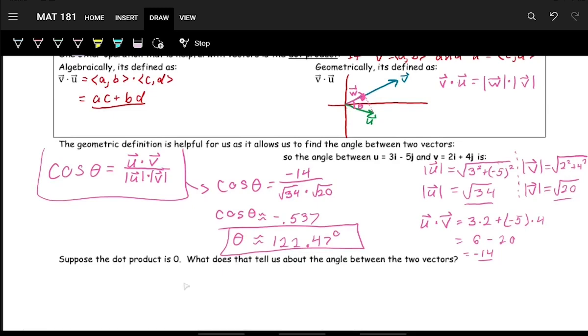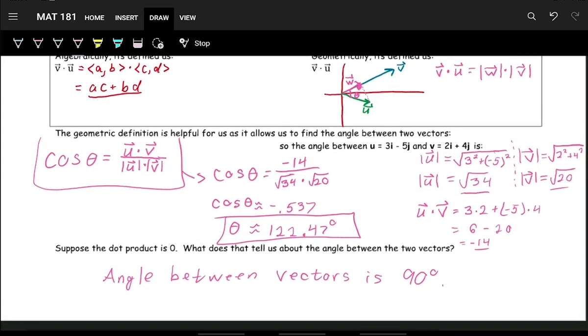So this means that the angle between vectors is 90 degrees. So we can't create that right angle because it already is a right angle.